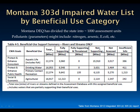The not-supporting column is basically the inverse of the supporting column, and another key takeaway is that there are a lot of stream miles that have not been fully assessed.